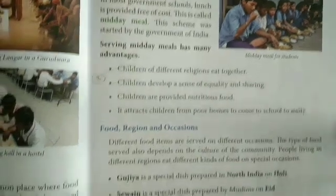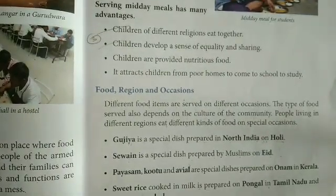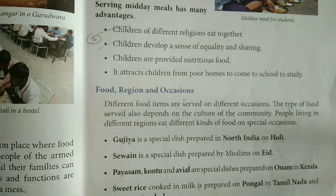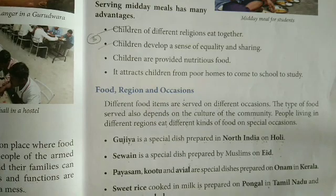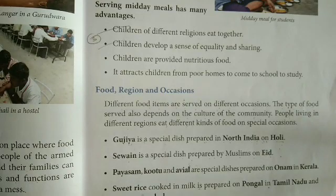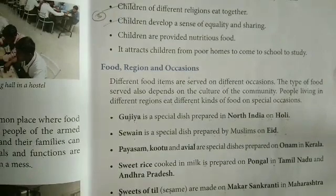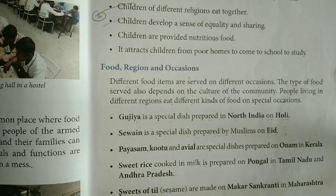Food regions and locations. Different food items are served on different occasions. The type of foods served also depend on the culture of the community. People living in different regions eat different kinds of food on special occasions. Jaise gujiya North India mein Holi mein banai jati hai. Muslim log Eid mein apni special dish banate hain. Sweet rice cooked as dinner is prepared on Mongolina festival in Tamil Nadu and Andhra Pradesh.